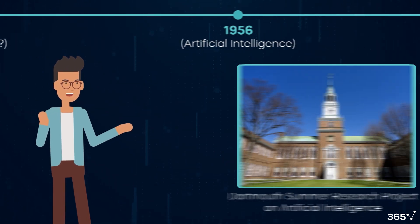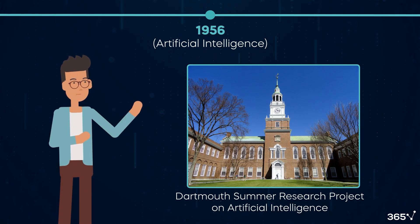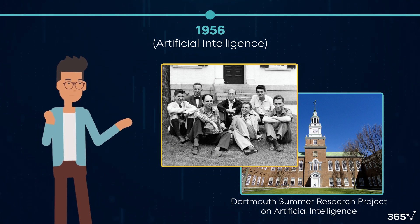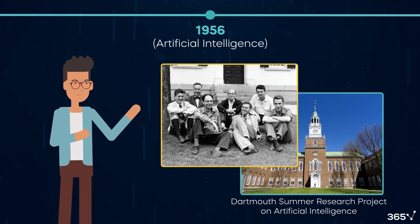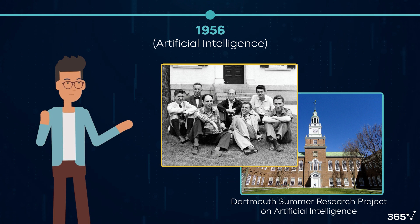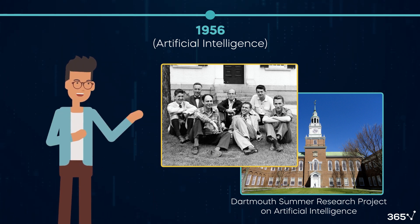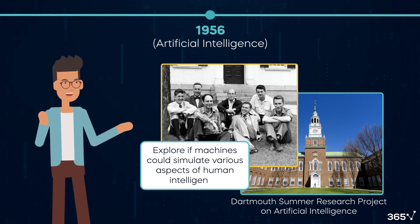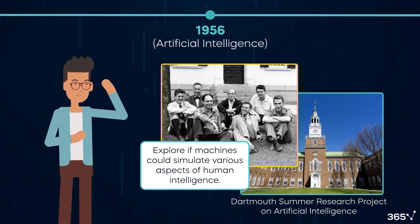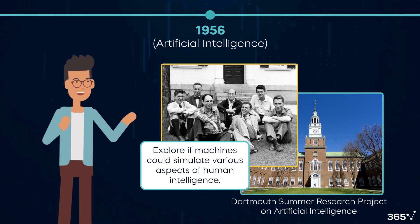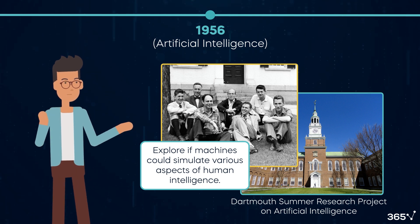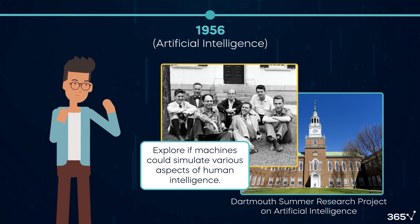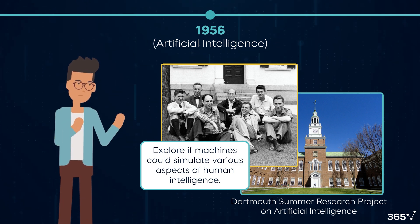Then, in 1956, the term artificial intelligence was coined at the Dartmouth Conference, and AI became a formal field of study. Participants at the conference agreed to bring together experts interested in neural networks, the theory of computation, and automata theory to explore if machines could simulate various aspects of human intelligence. As you can see, scientists have taken inspiration from human intelligence and aimed to impart it to machines from the very beginning.